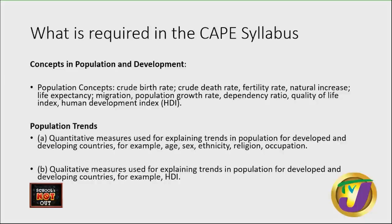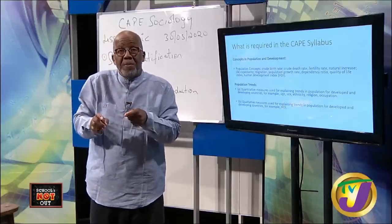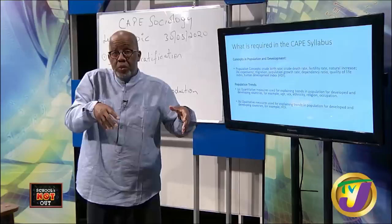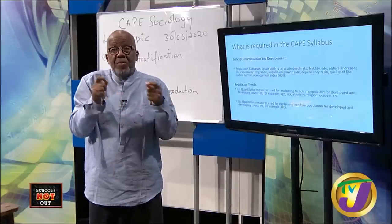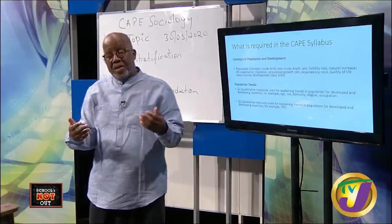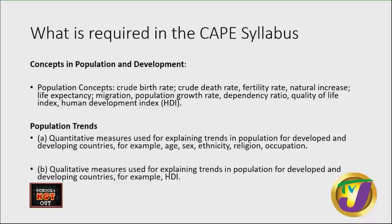I always start with the syllabus because too many times students believe it's the teacher's responsibility to finish it. Given COVID-19, some of the syllabus must be done on your own. From the CAPE syllabus, the concepts you should be able to complete before the exam include: crude birth rate, crude death rate, fertility rate, life expectancy, population growth, and dependency ratio.